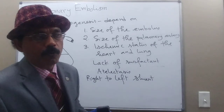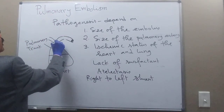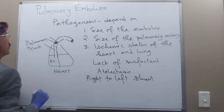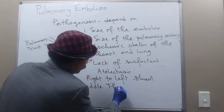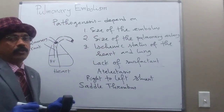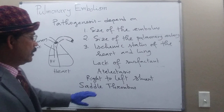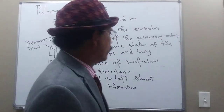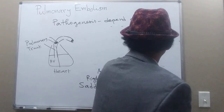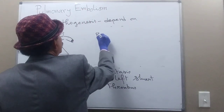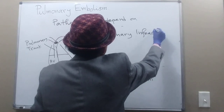A right-to-left shunt is a possibility. Also, if the embolus is at the bifurcation of the pulmonary trunk, we call it a saddle thrombus. This is a very acute condition — it happens suddenly and the person may die very quickly from blockage at the bifurcation of the pulmonary trunk.